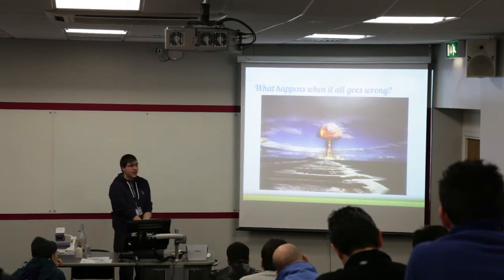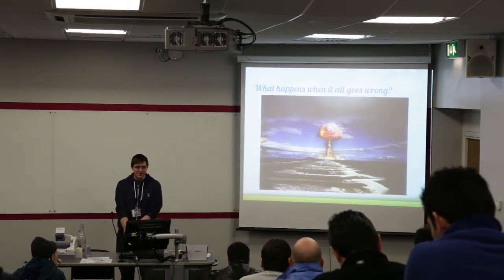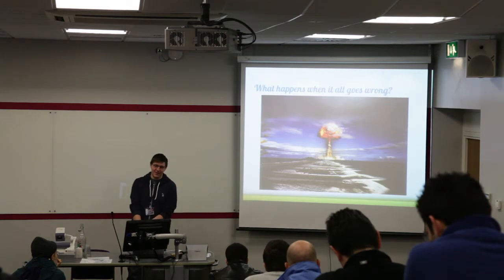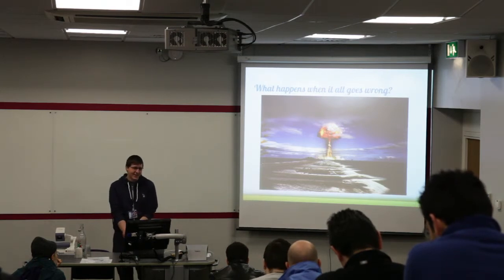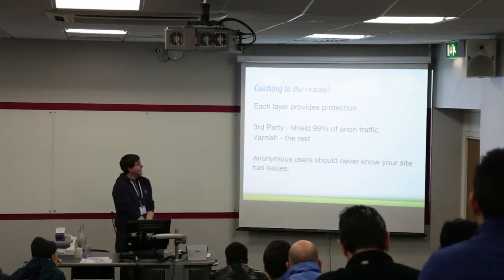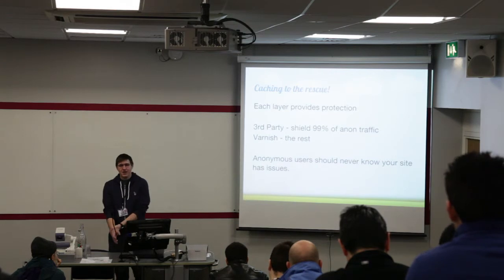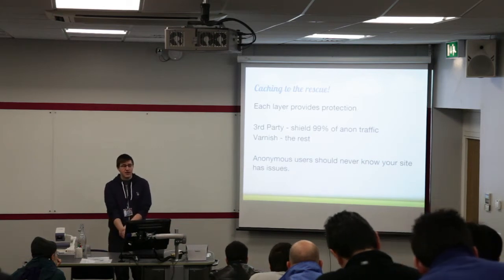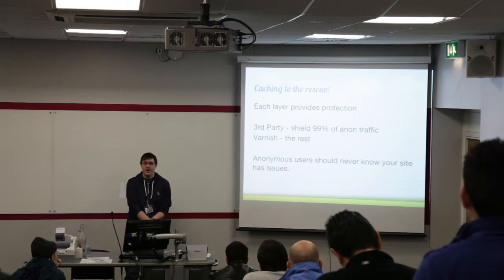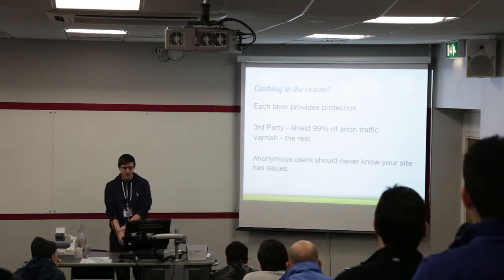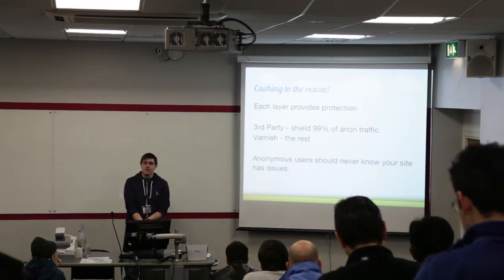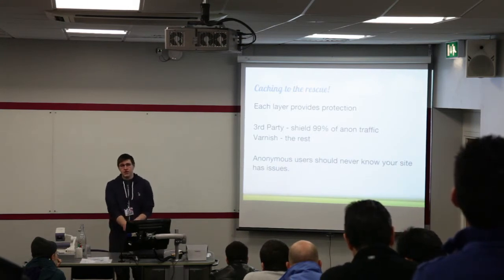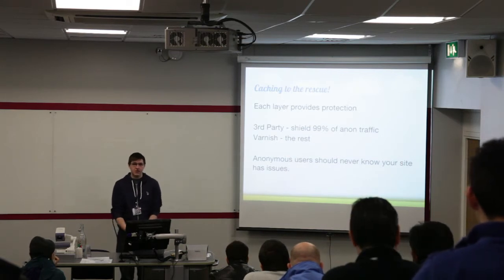So what happens when it all goes wrong? The first thing we hear is clients ringing up saying everything is down. Because there are so many layers, you should have good coverage. Third-party caching like Akamai will shield 99% of anonymous traffic, and Varnish handles the rest. If your site is configured well, anonymous users should never know there's an issue — your entire Drupal infrastructure can be down and dead, but anonymous users will still be seeing a fresh site with no service loss.